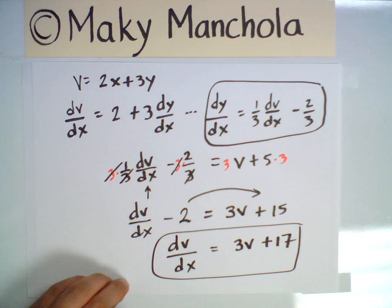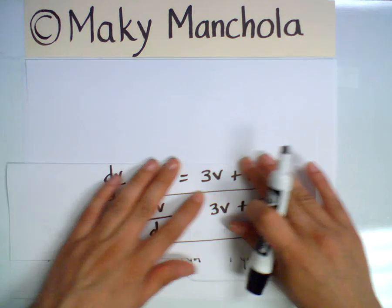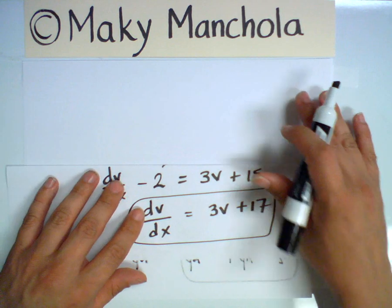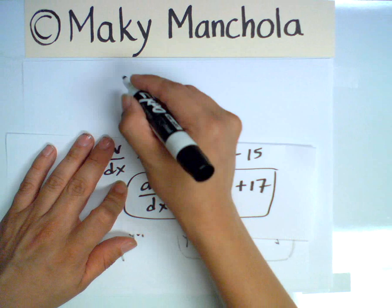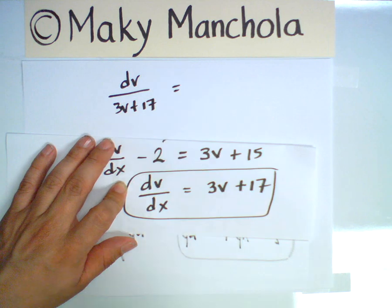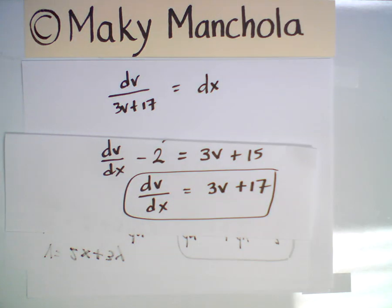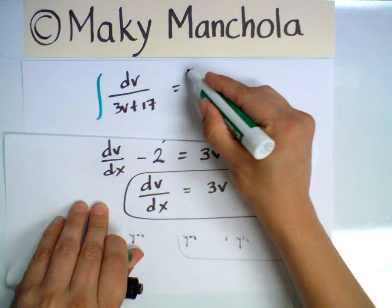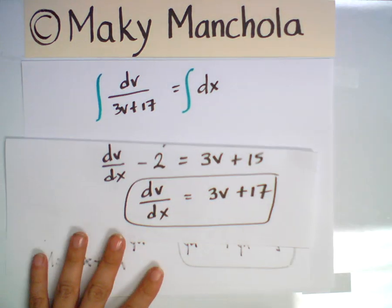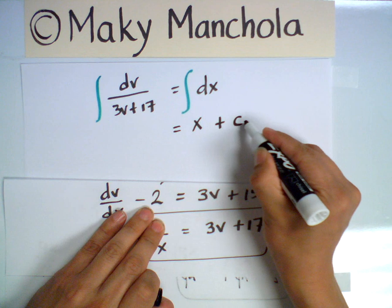Separating variables formally — which is acceptable in a differential equations course — we get dv divided by (3v plus 17) equals dx. We formally integrate both sides. The right-hand side becomes x plus a constant C1. On the left-hand side we get the natural logarithm of the absolute value of (3v plus 17), with a factor of one-third.